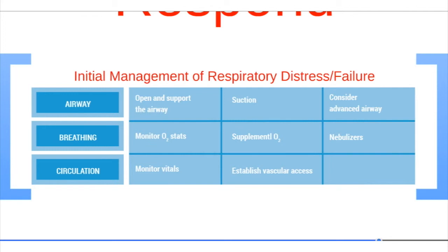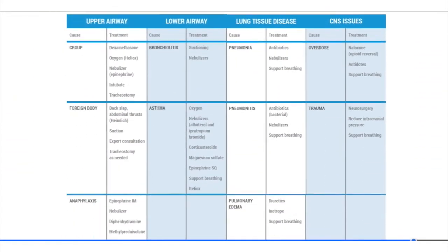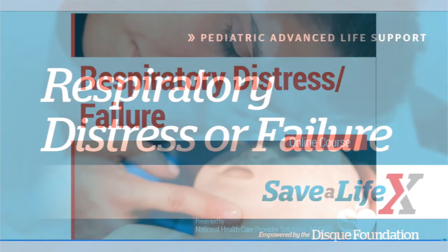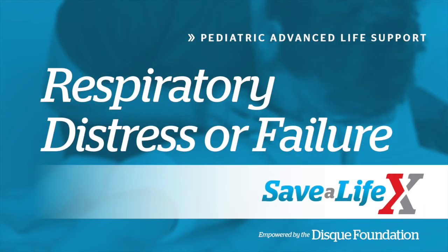Here is a chart describing the treatments for upper airway, lower airway, lung tissue disease, and CNS issues for respiratory distress or failure in children and infants. That's all for respiratory distress and failure. The next lesson will be bradycardia.